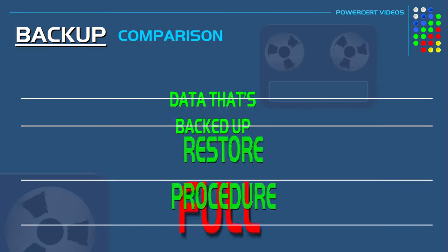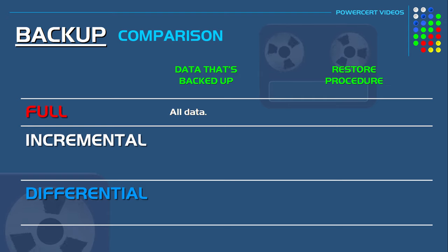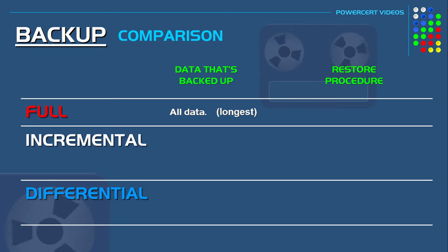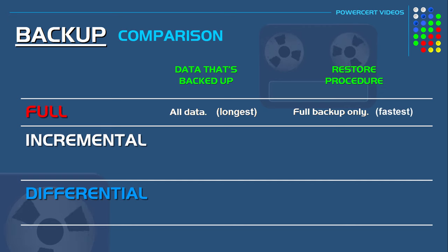Here is a final review and comparison of the three types of backups. Starting with a full backup — a full backup backs up all the data, but it takes the longest to perform. As far as restoring the data, the only backup that needs to be restored is the one full backup, and since it only requires that single full backup, the restore process is the fastest.